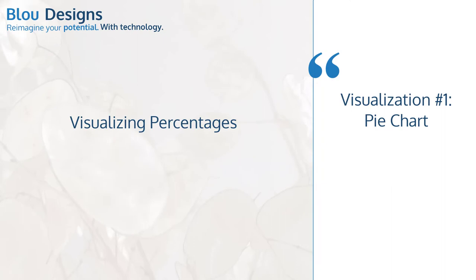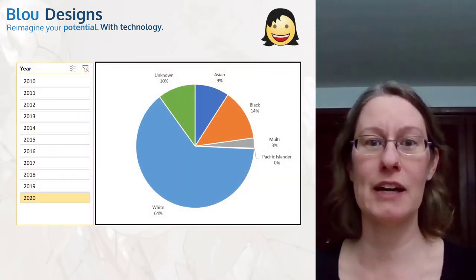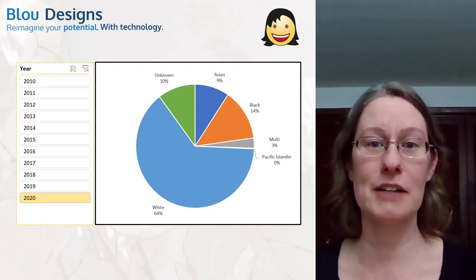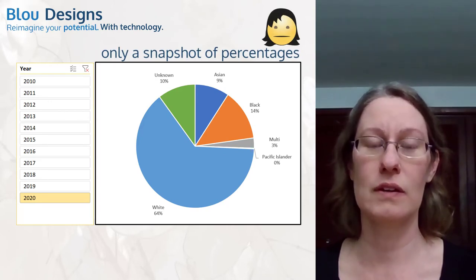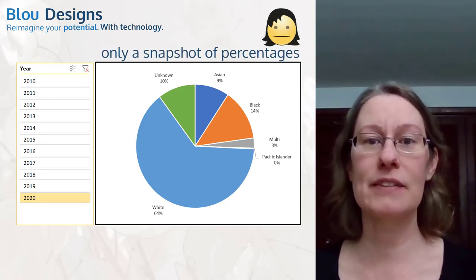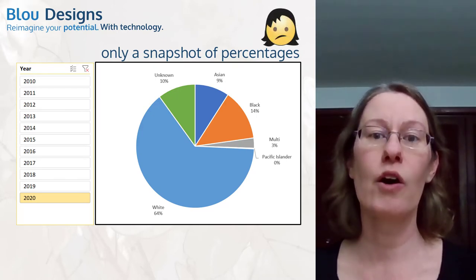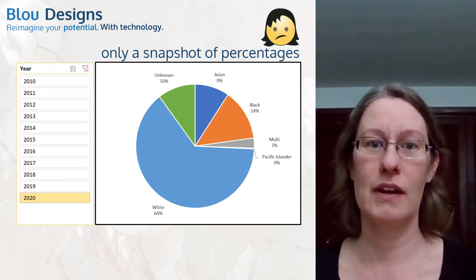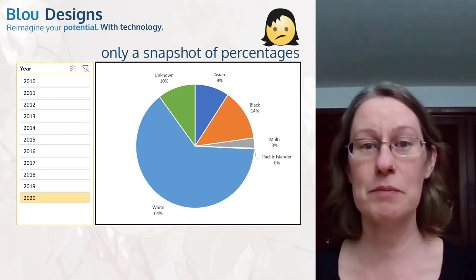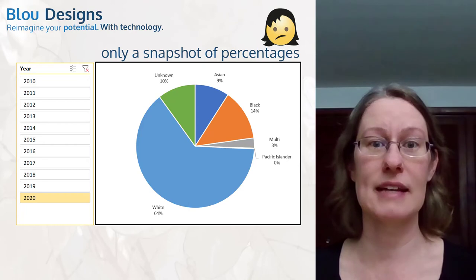The first visualization I'll demonstrate is a pie chart, because it's a natural choice when you're looking for percentages. This pie chart shows the racial makeup of the data set's employees in 2020. The problem here is that a pie chart is a snapshot of percentages of a whole — there is no history here, meaning there's no context to show whether this is an improvement over where you were a year ago or whether you're on the right track for your targets. If all you needed was a simple yes or no to see if you've met a certain target percentage, this might be sufficient. But you're interested in assessing how you're trending, so you need a different visualization.